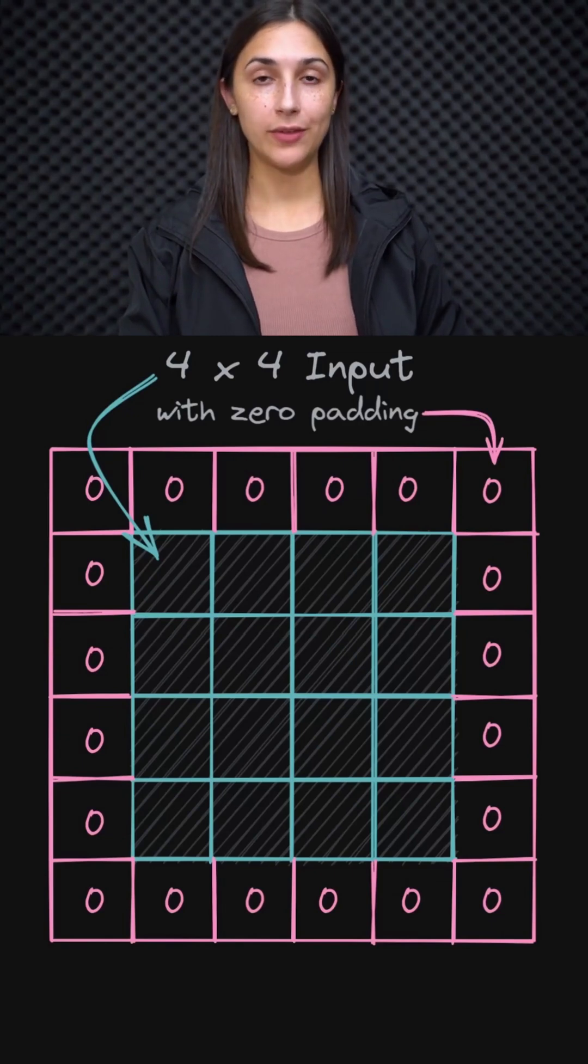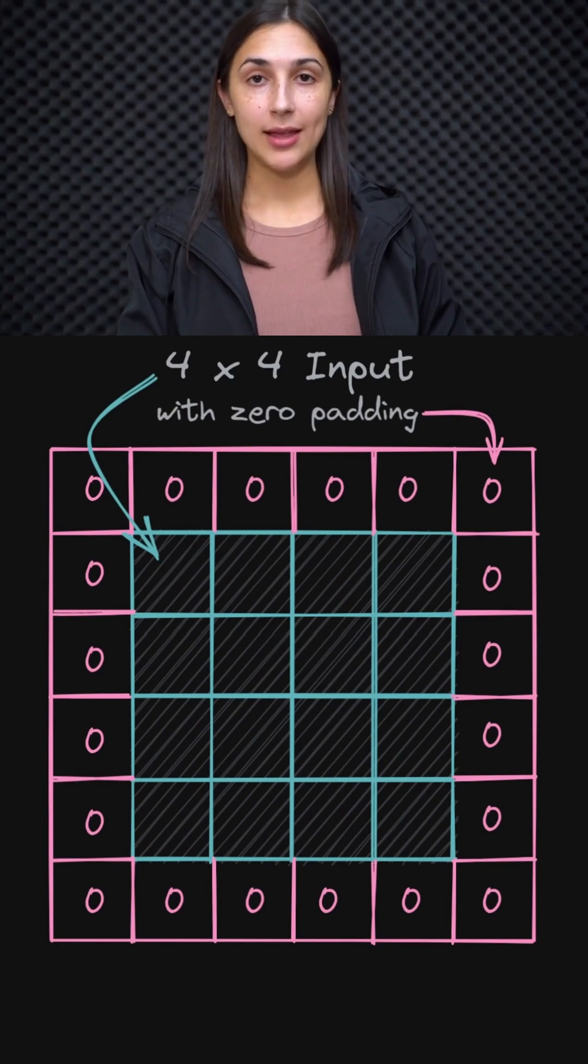Zero padding is a technique that we can use to preserve the original input size as it's passed through convolutional layers. As we can see with this example, zero padding works by adding a border of pixels with value zero around our input image. This adds a layer of padding of zeros to our input, and that's where we get the name zero padding from.